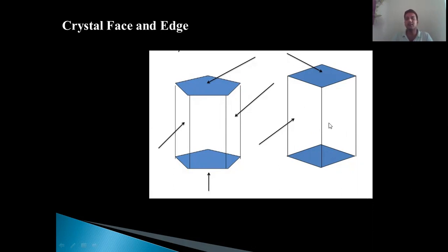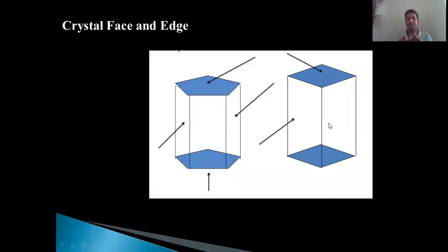An edge is the line generated by the intersection of two adjacent faces. In the diagram you can see that where two faces join or intersect with each other, a line is formed — that line is termed as an edge. When you have more than two faces, the crystal will definitely have an edge where two faces intersect each other.